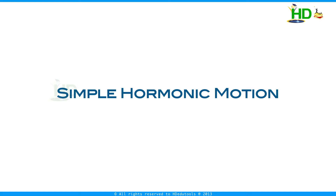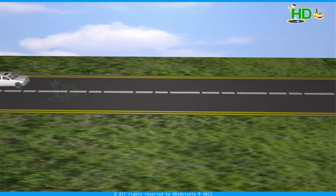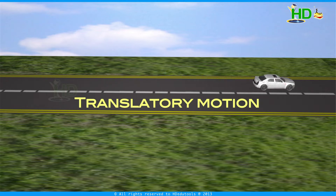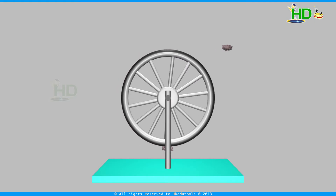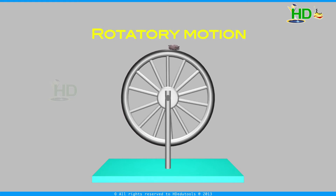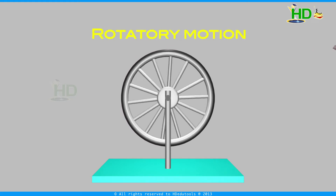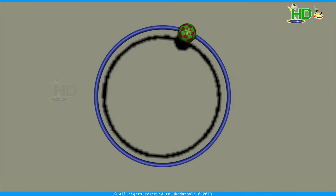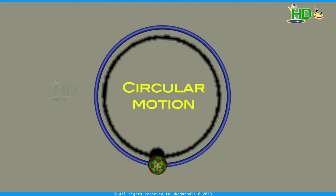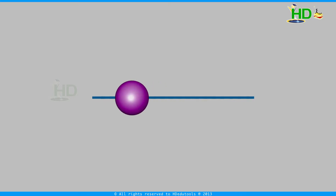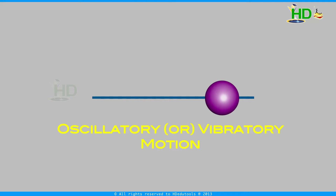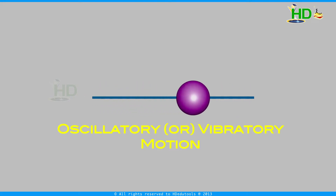We know different kinds of motions in our daily life. This is translatory motion. Now this kind of motion is called rotatory motion. And what about this? This is circular motion. Now this kind of motion is oscillatory or vibratory motion.